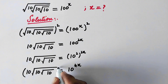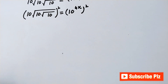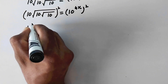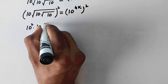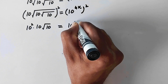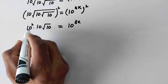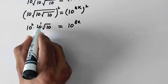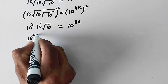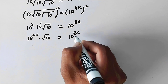So now here again we will take square on both sides. Here it will be: square root 10 times square root 10 times square root 10 is equal to 10 raised to power 4 times 2, which will be 8x. And now here it will be 10 raised to power 4 times square root 10 times square root 10 is equal to 10 raised to power 8x.